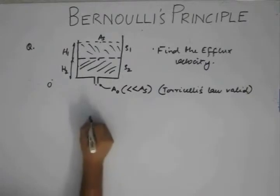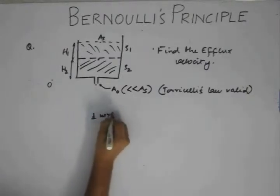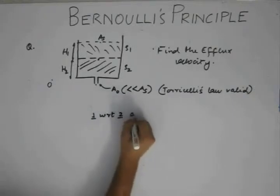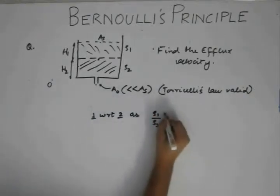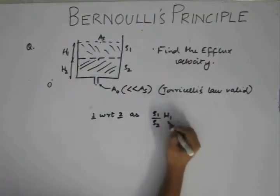We had equivalent height of 1 with respect to 2 as rho1 by rho2 into h1. So h1 is the height of the column of fluid rho1.